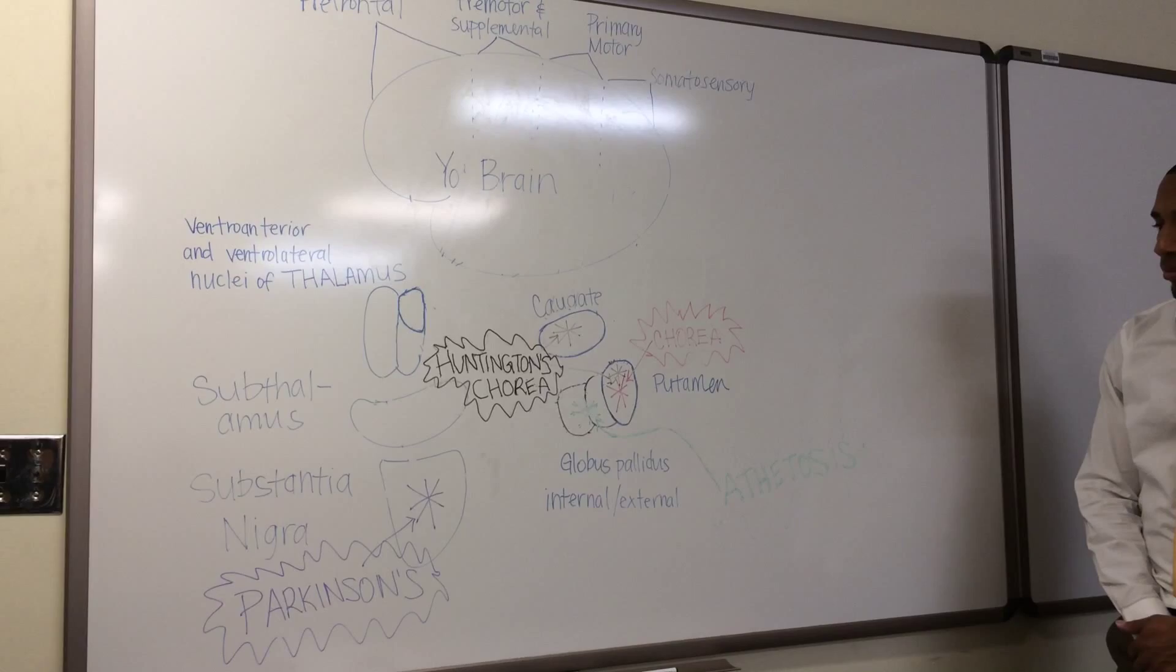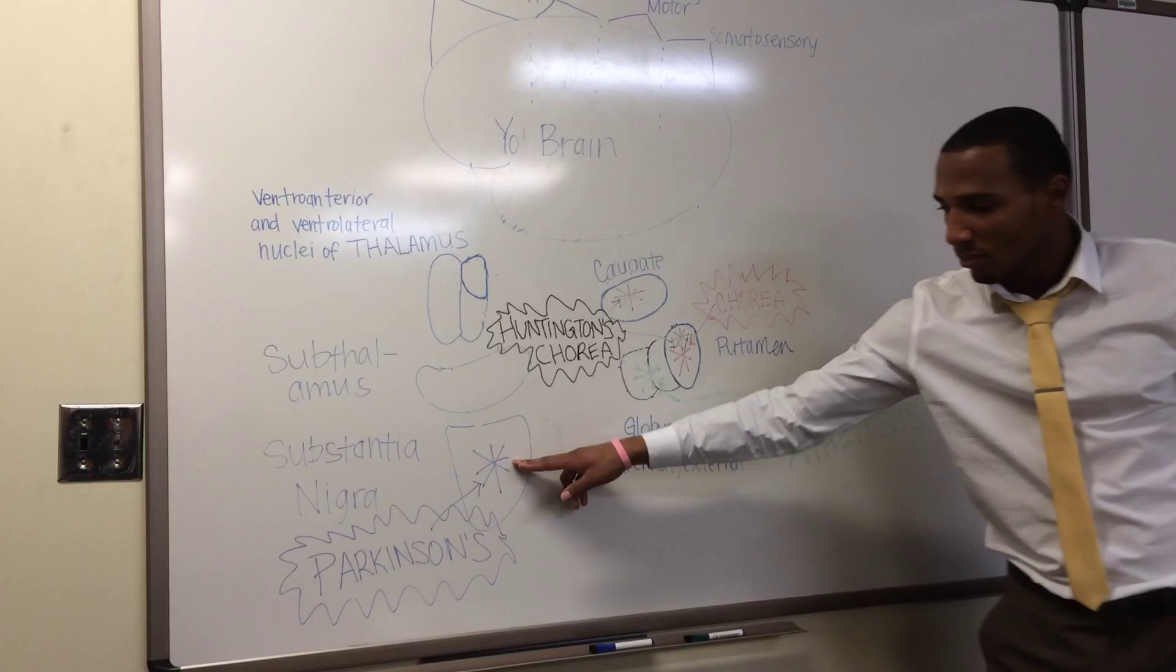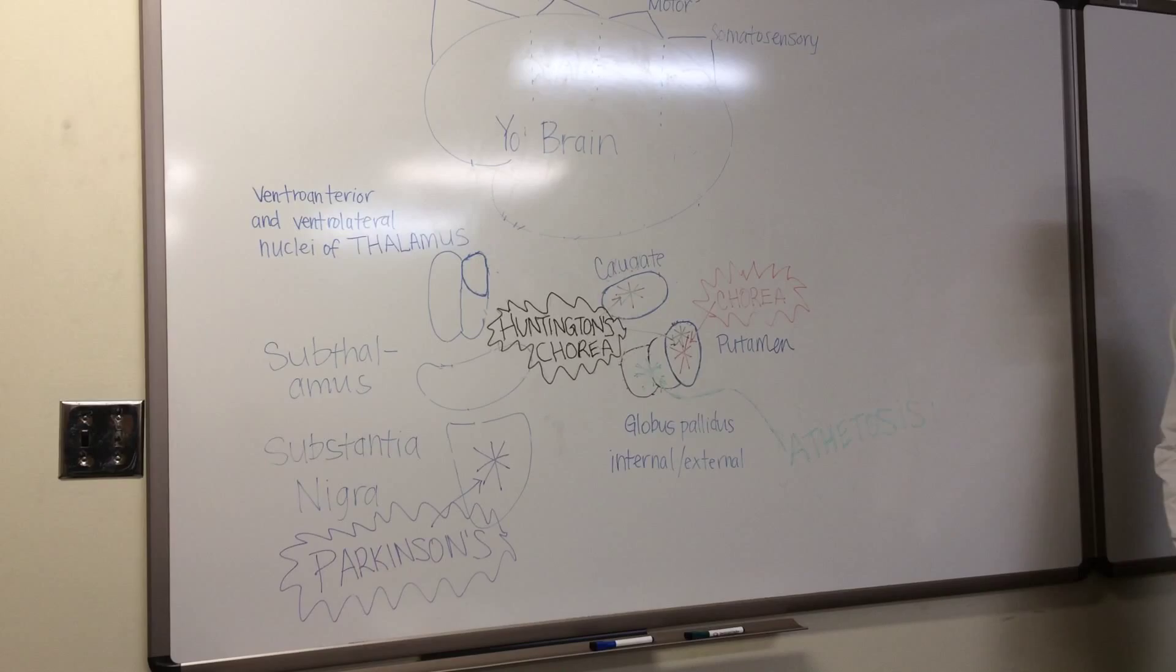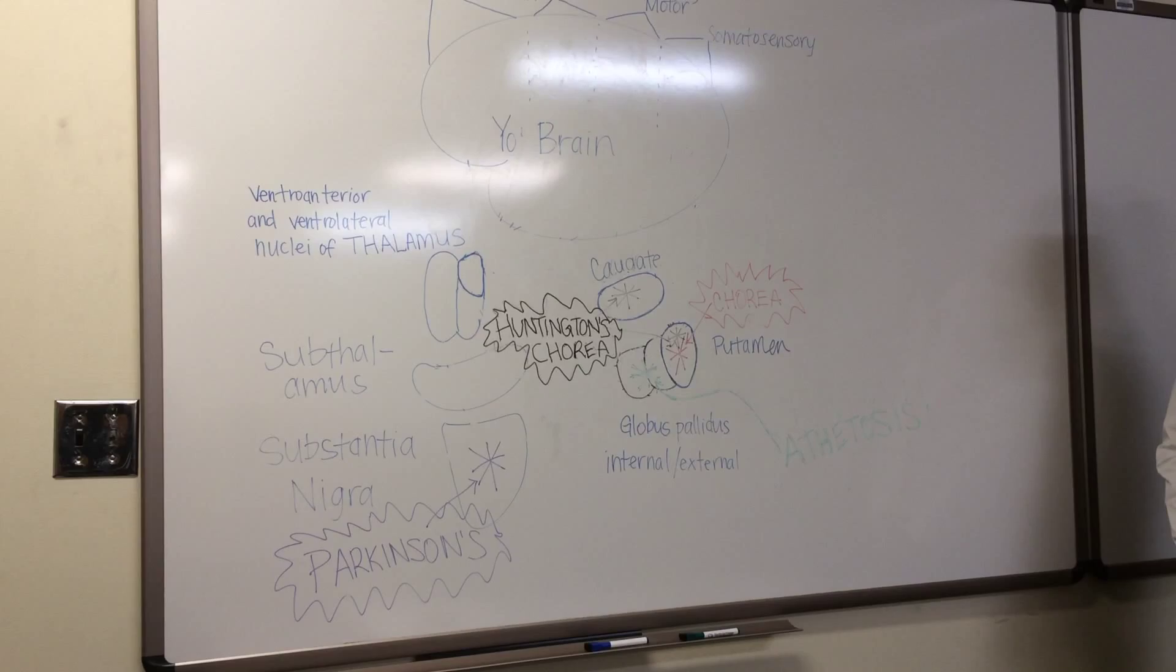The last lesion site is the substantia nigra. A clinical abnormality that occurs here is Parkinson's disease. This is characterized by loss of dopaminergic input from substantia nigra to the caudate and putamen. It is also characterized by rigidity, tremors, and akinesia.